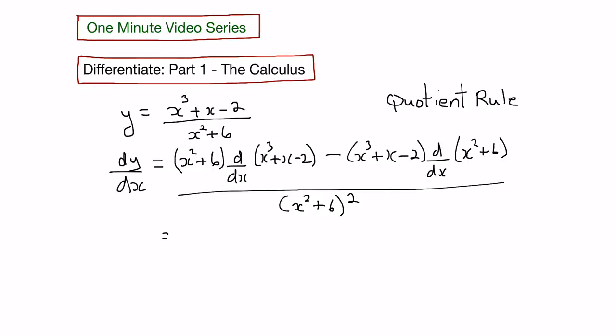So this becomes x squared plus 6 times the derivative of the top function which would be 3x squared plus 1, minus x cubed plus x minus 2 times the derivative of the bottom function which would be 2x,